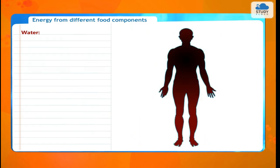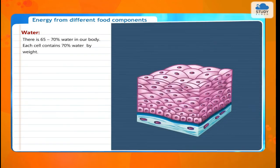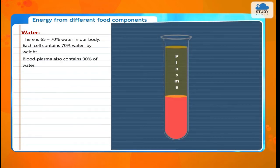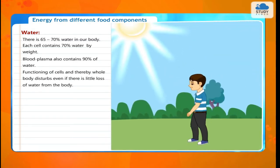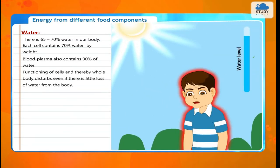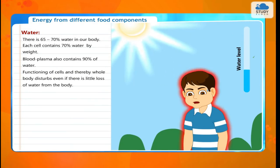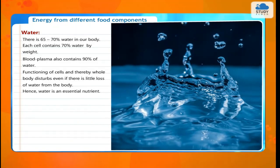There is 65–70% water in our body. Each cell contains 70% water by weight. Blood plasma also contains 90% water. Functioning of cells and thereby the whole body is disturbed even if there is a little loss of water from the body. Hence, water is an essential nutrient.